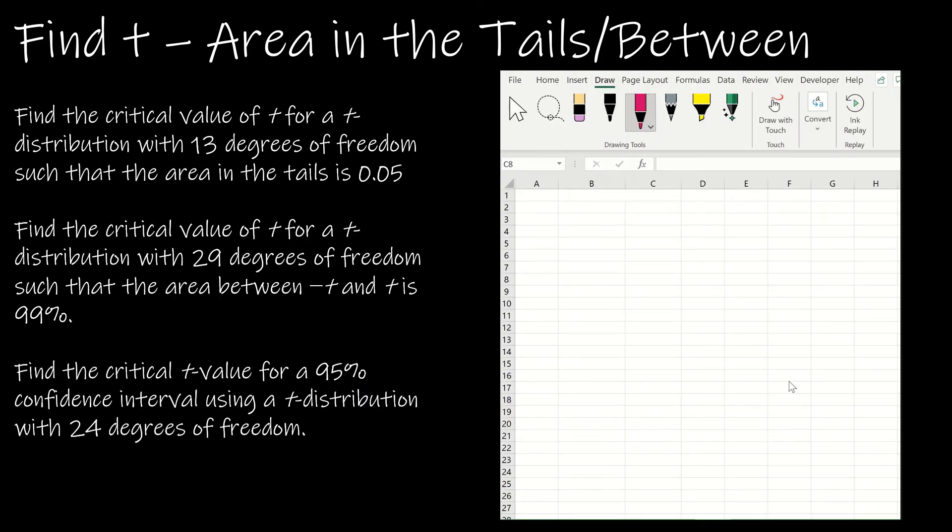Let's look at a few of these questions together. This is just going to help us find the critical value. In our next video, we'll actually find the intervals, but this is a solid first step for us to get there. We want to find the critical value of t for a t-distribution with 13 degrees of freedom, such that the area in the tails is 0.05.